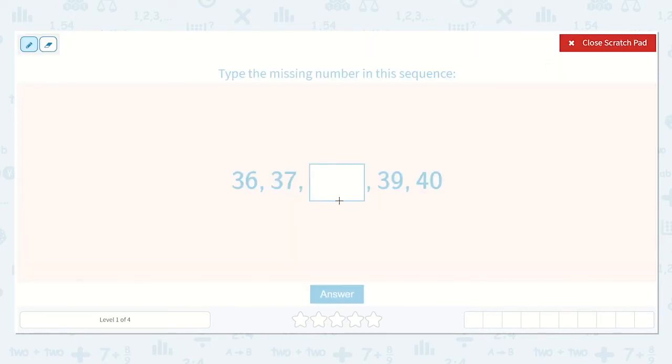So we're given the numbers 36, 37, a number, then 39, 40. As we're counting, I see that the ones place is moving up one digit every time. So it's 36, 37, 30. What do you think would come next? What comes after 7? Yeah, 8. So 38.